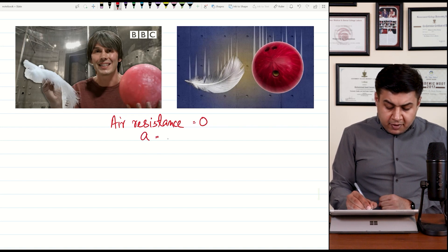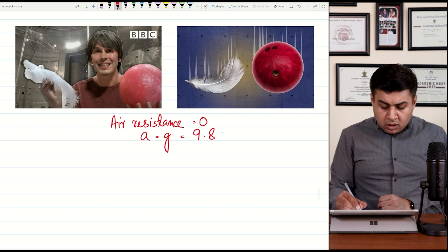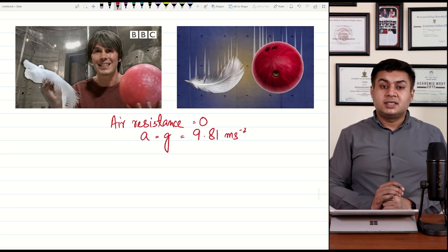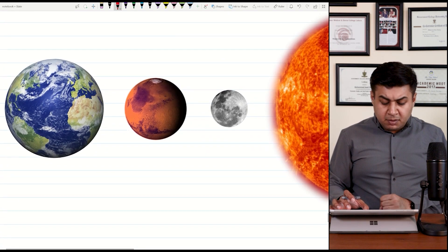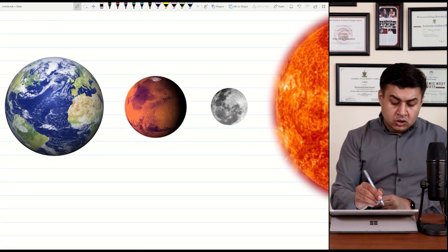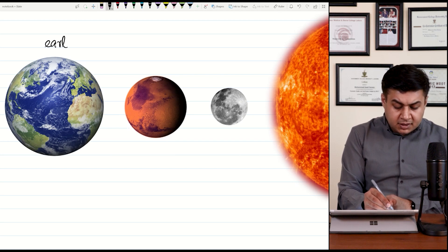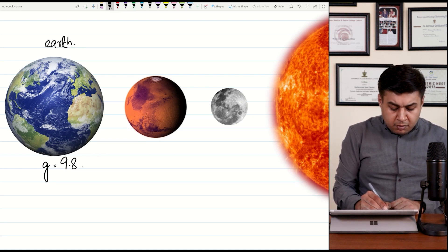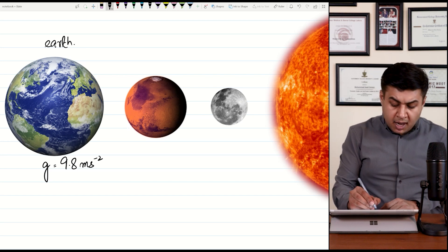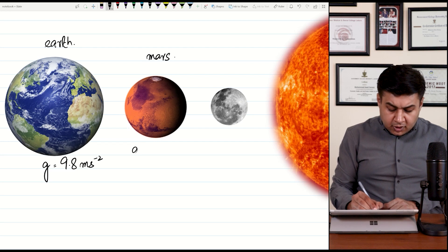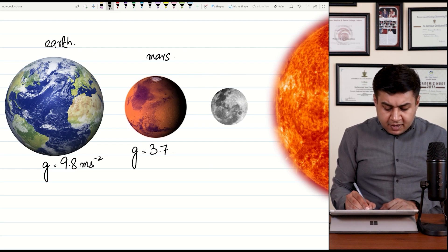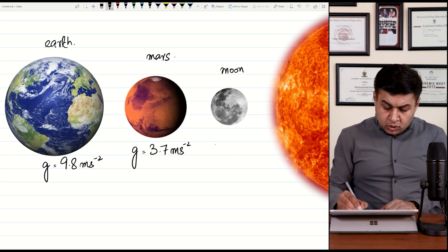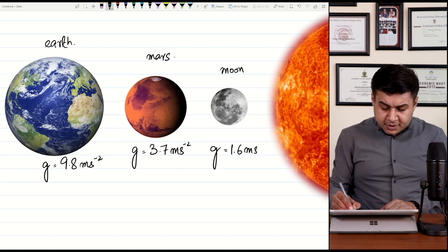If air resistance is not considered, acceleration due to gravity which is also referred as g is 9.8 or 9.81 meters per second square. But different planets have different value of acceleration due to gravity. For example, in this diagram, we have some different planets and there is one star. The first planet is our planet Earth. We have just discussed that the value of gravitational field strength or you call it acceleration due to gravity for Earth is 9.81 meters per second square. The next planet is Mars. For Mars, the value of acceleration due to gravity is approximately 3.7 meters per second square. The next one is Moon. Moon ki jo gravity ki value hai that is almost 1.6 meters per second square.